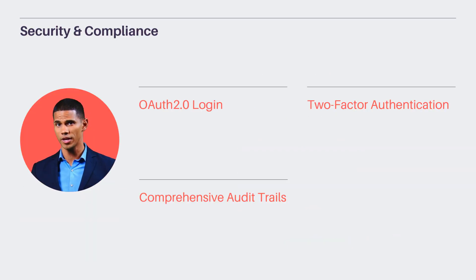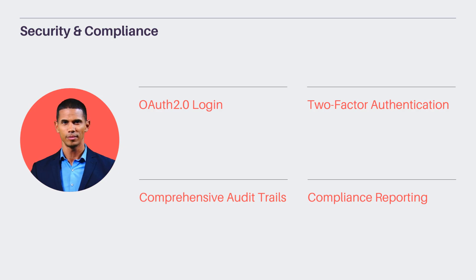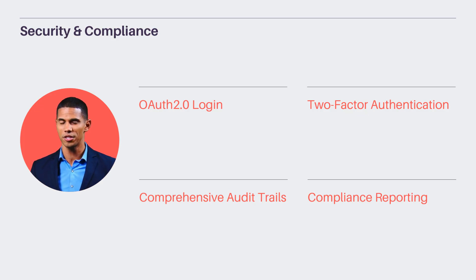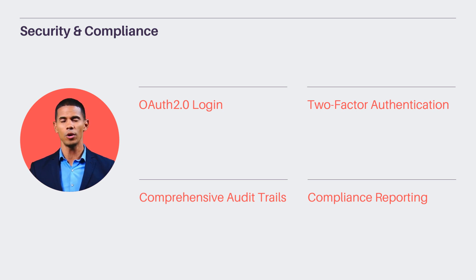Role-based security in Gravitas ETRM ensures secure operations with OAuth 2.0 login, two-factor authentication, and comprehensive audit trails. It supports GDPR, REMIT, and EMIR compliance reporting, crucial for regulated environments. This robust security framework allows energy sector professionals to operate confidently, knowing their data and operations are protected and compliant with industry standards.